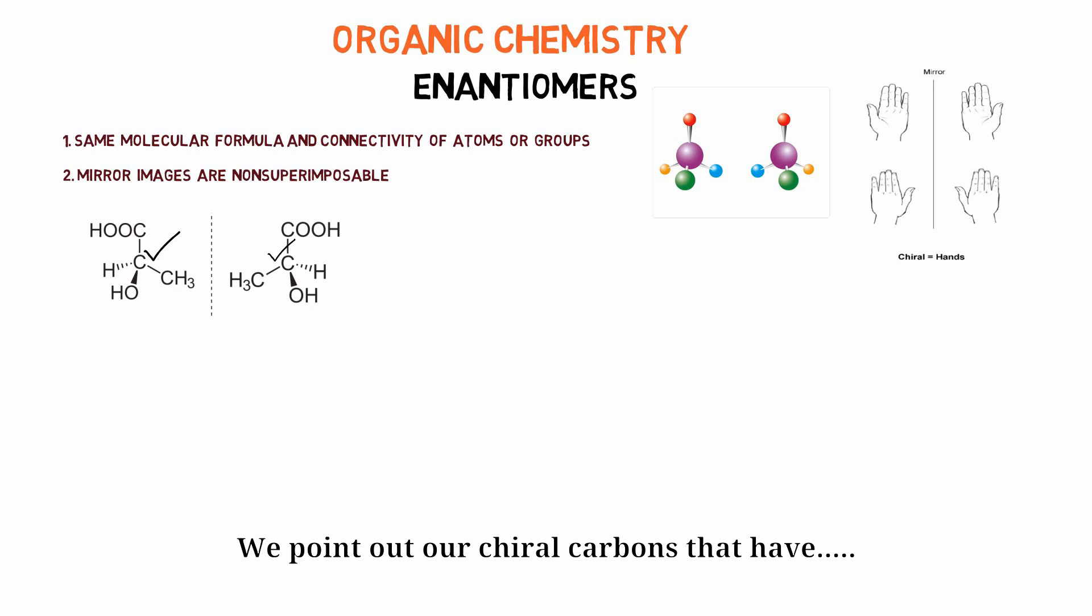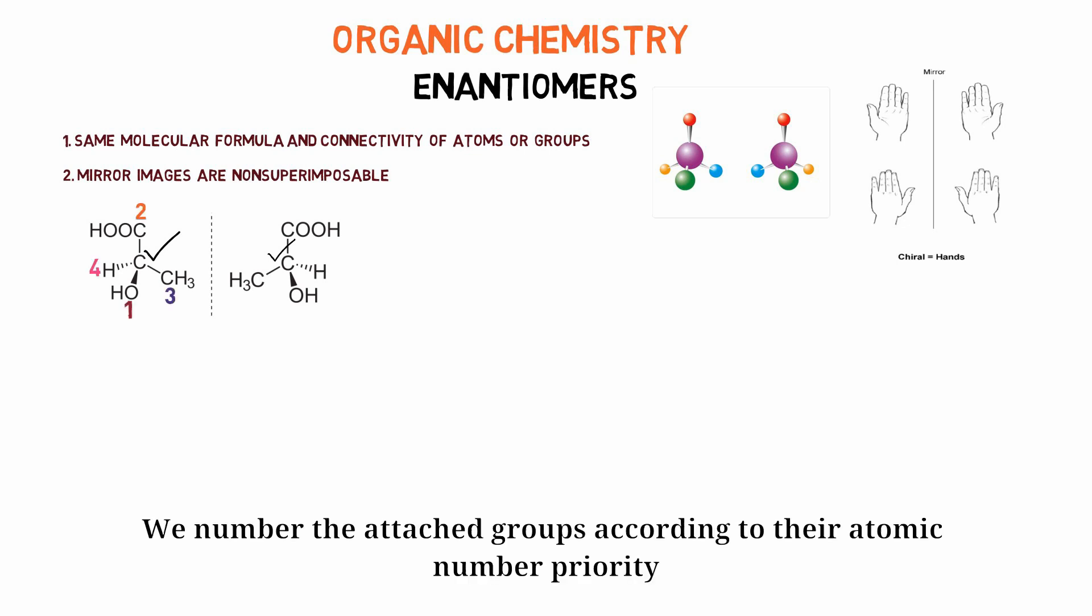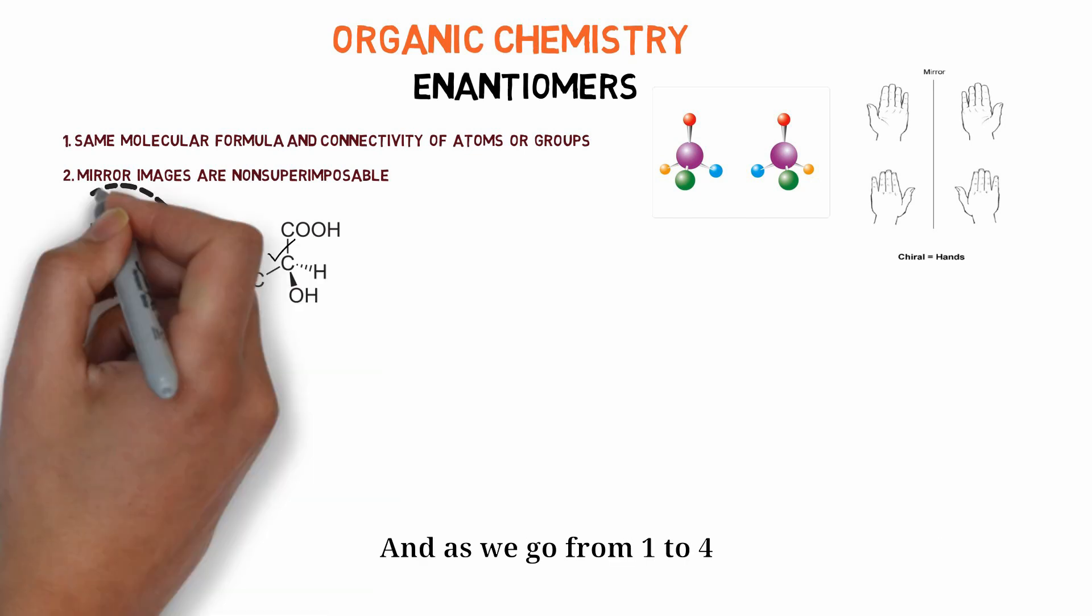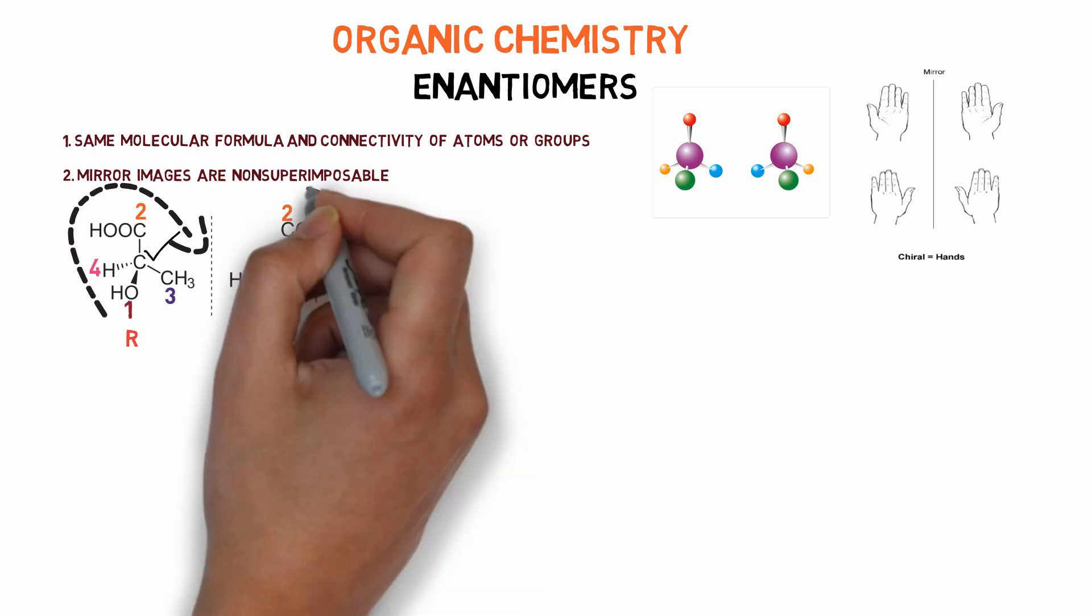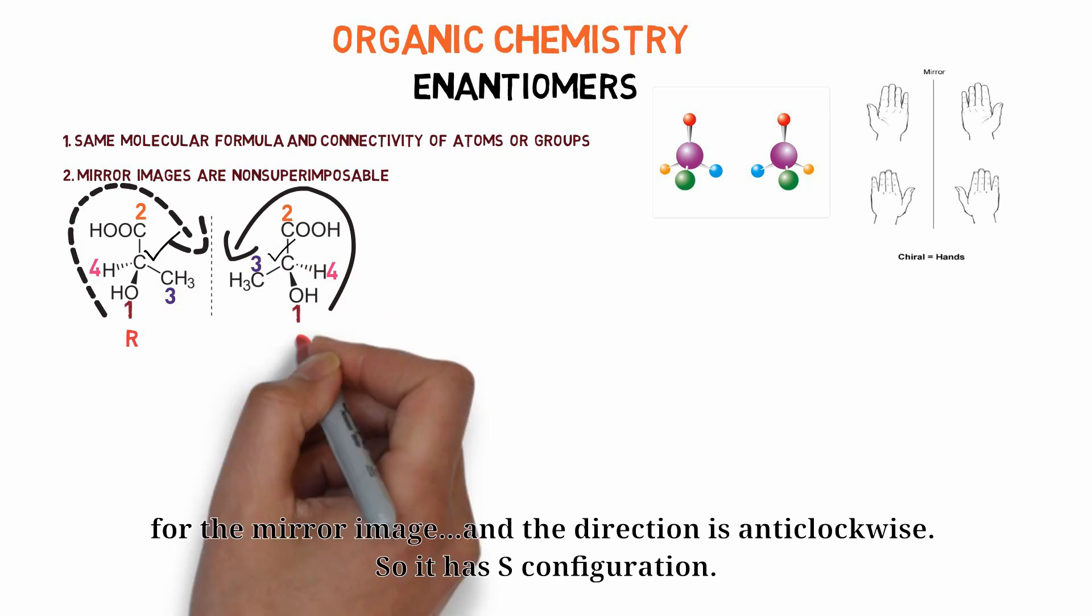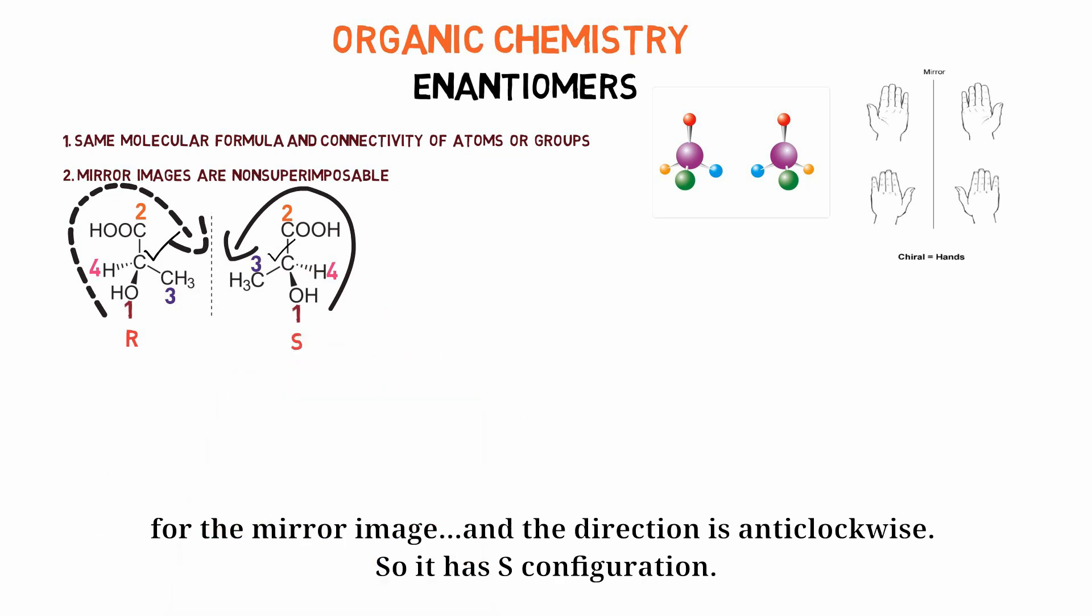We point out our chiral carbons that have four different groups attached to it in both compounds. Then the first compound we drew, we numbered the attached groups according to their atomic number priority. And as we go from one to four, we see the direction is clockwise. So we have R configuration here. We also numbered the groups in the same way for the mirror image and the direction is anti-clockwise. So it has S configuration.